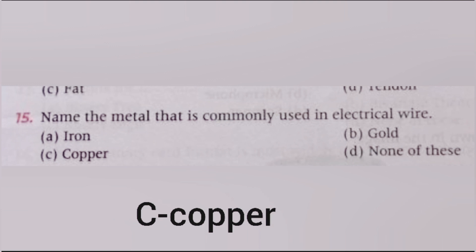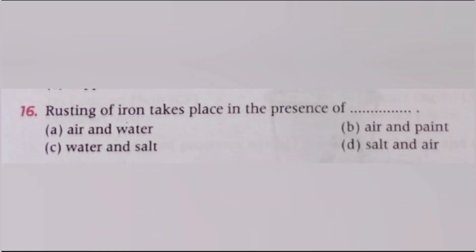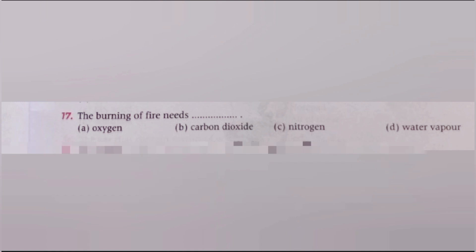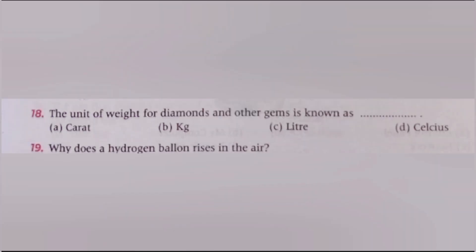Next, rusting of iron takes place in the presence of: air and water, air and paint, water and salt, salt and air. The answer is A, air and water. Next, the burning of fire needs which gas? Oxygen, carbon dioxide, nitrogen, water vapor. The answer is A, oxygen.